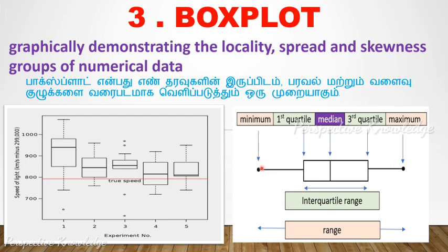In a box plot: the first point is the minimum, the first line is the first quartile, the middle is the median, the third point is the third quartile, and the last point is the maximum. The box represents the interquartile range. You can also identify differences and outliers using box plots.